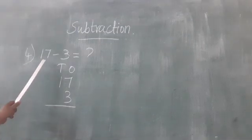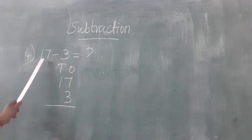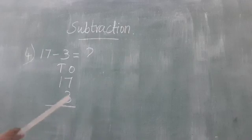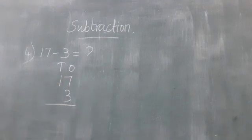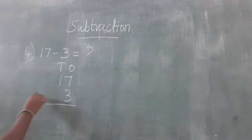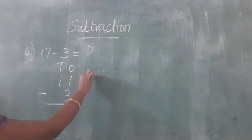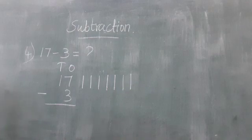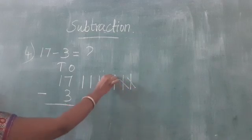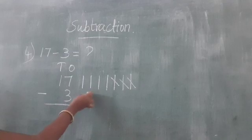Next sum: 17 minus 3. So first we write number 17, next we write number 3. 7 is the 1's place, 1 is the 10's place. So first we subtract the 1's place: 7 minus 3. So first we draw 7 lines: 1, 2, 3, 4, 5, 6, 7. 7 minus 3. So we cut 3 lines: 1, 2, 3.